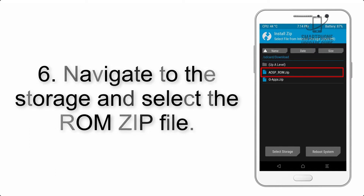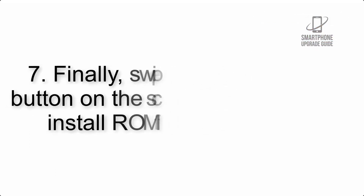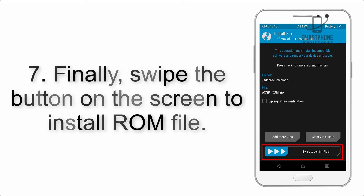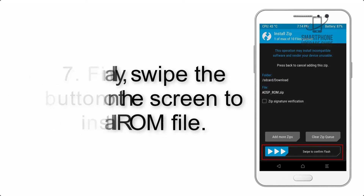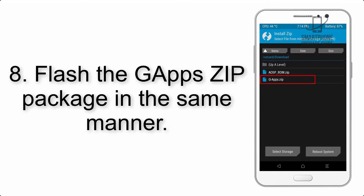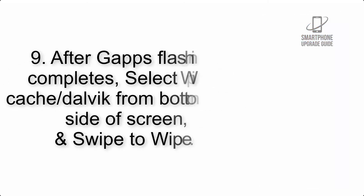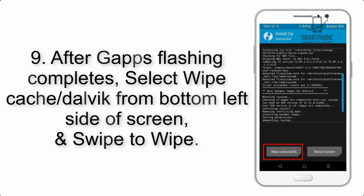Step 5: Go back to the recovery main screen and tap on the Install button. Step 6: Navigate to the storage and select the ROM zip file. Step 7: Finally, swipe the button on the screen to install the ROM file.